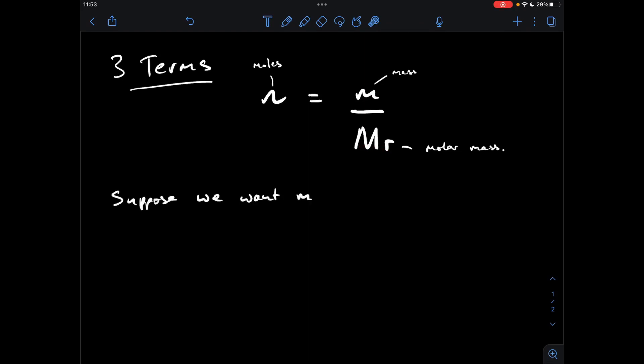So let's just suppose we want m. So we want this term here, we want to calculate the mass of a substance. So we've got to get m on its own, making it the subject of the equation, is what the lingo is. So how do we do that?